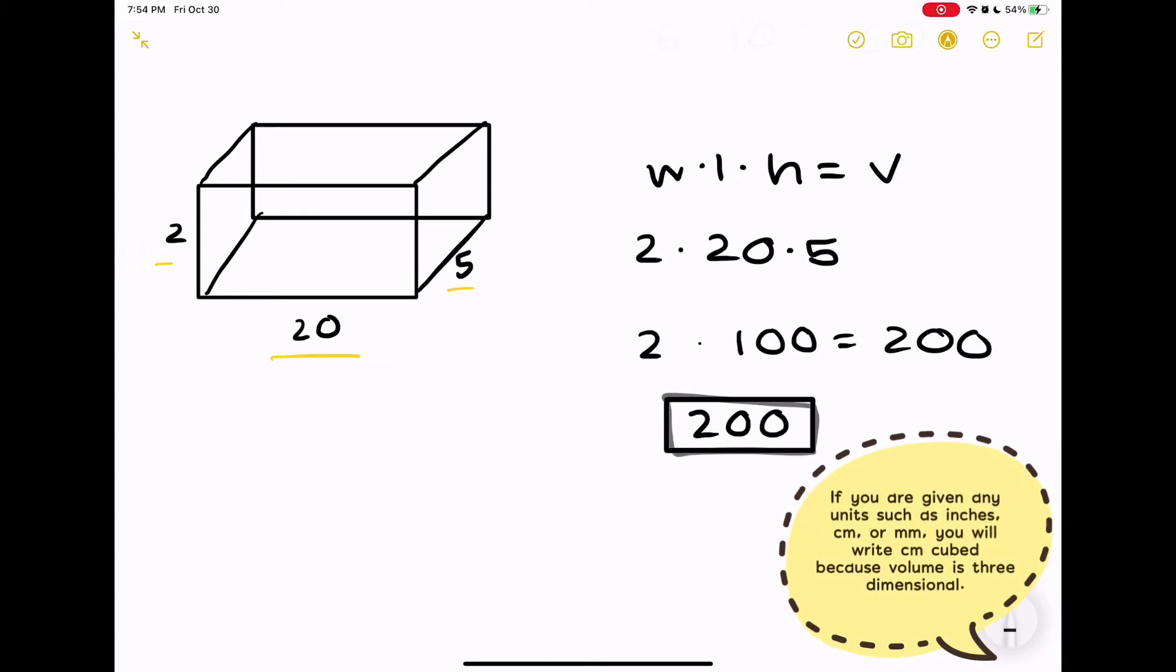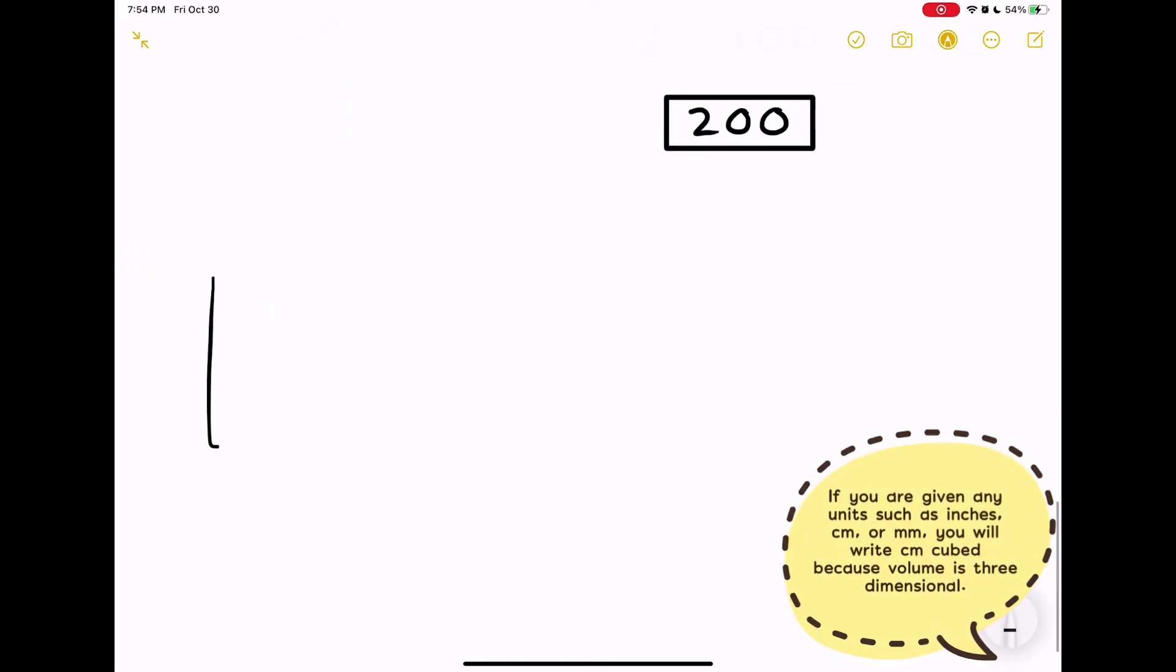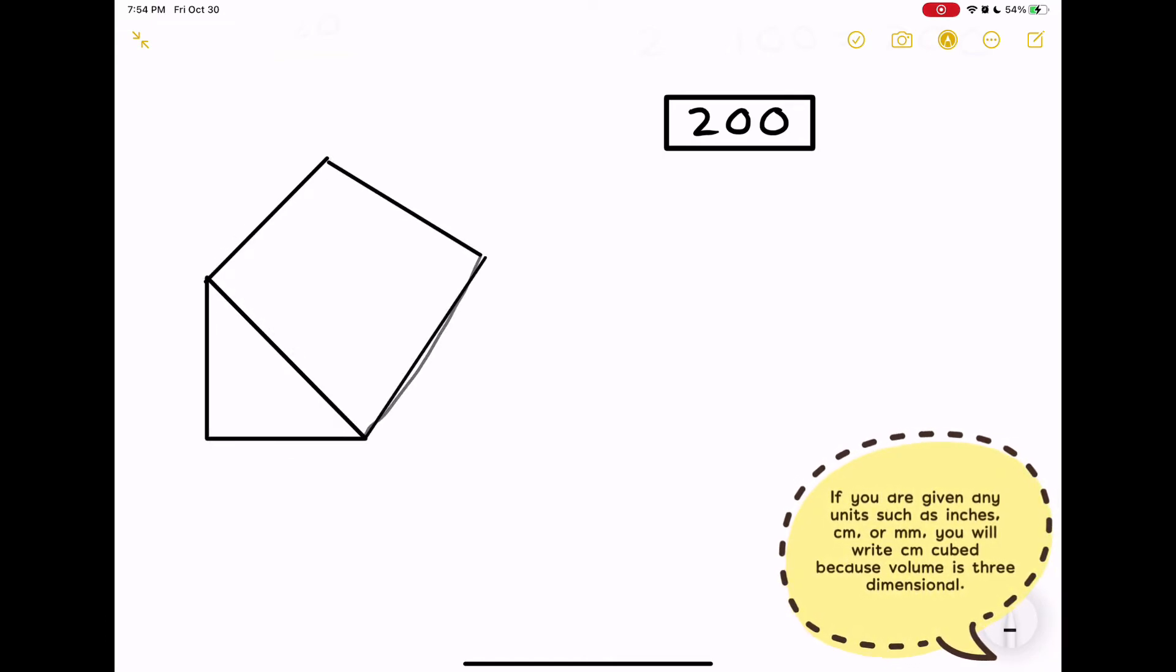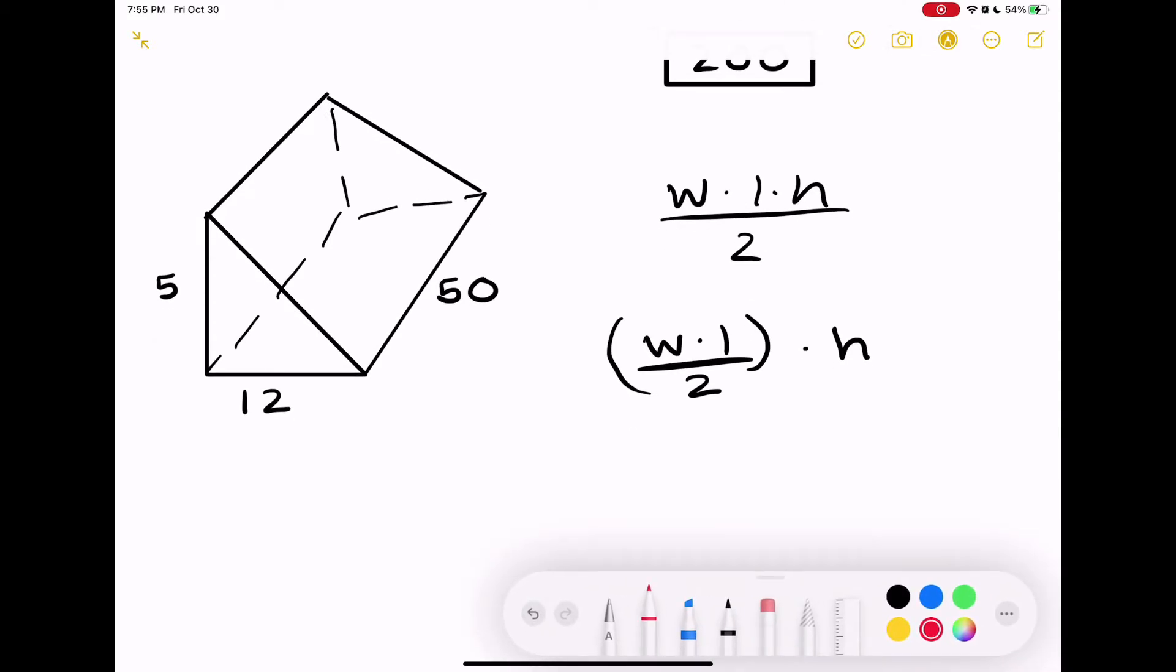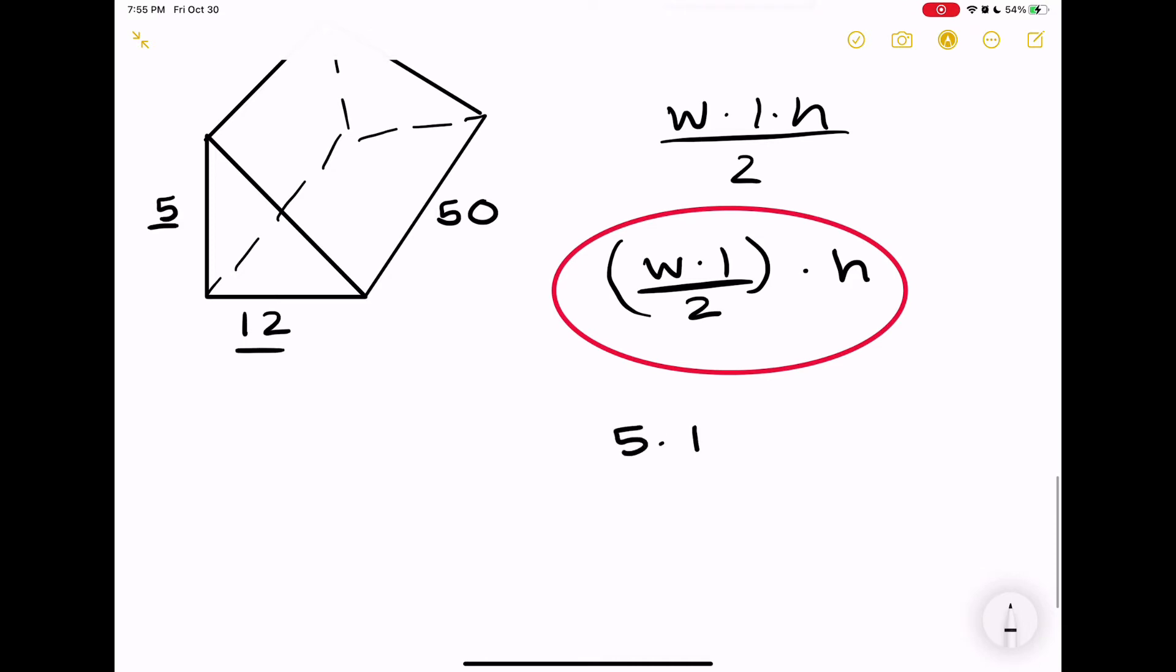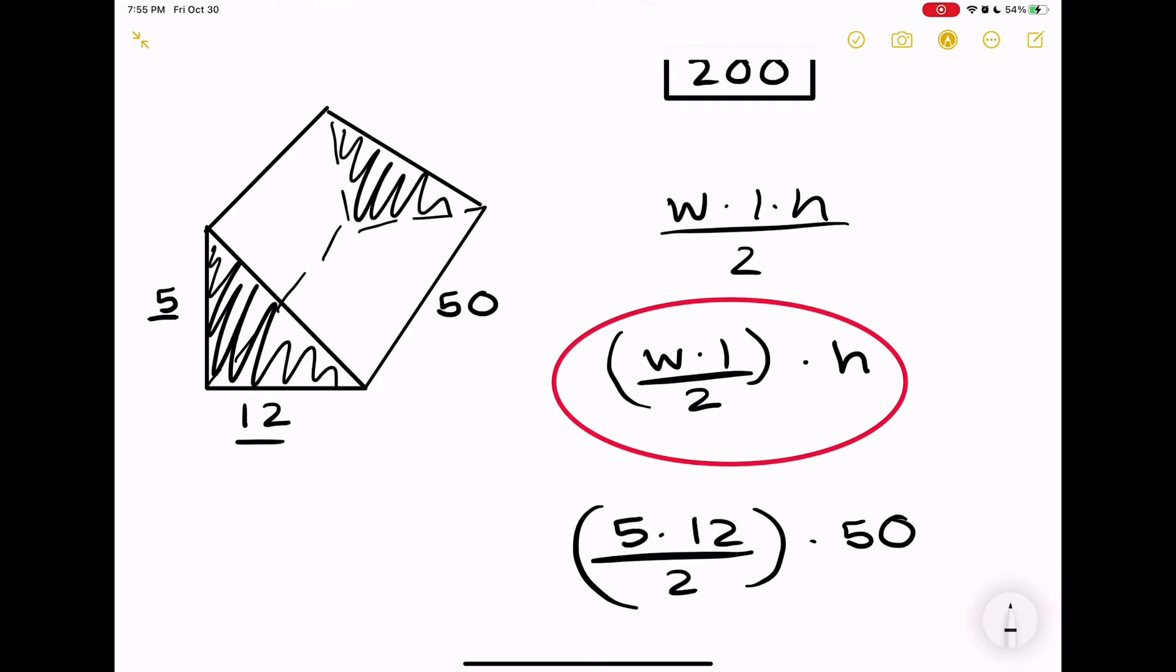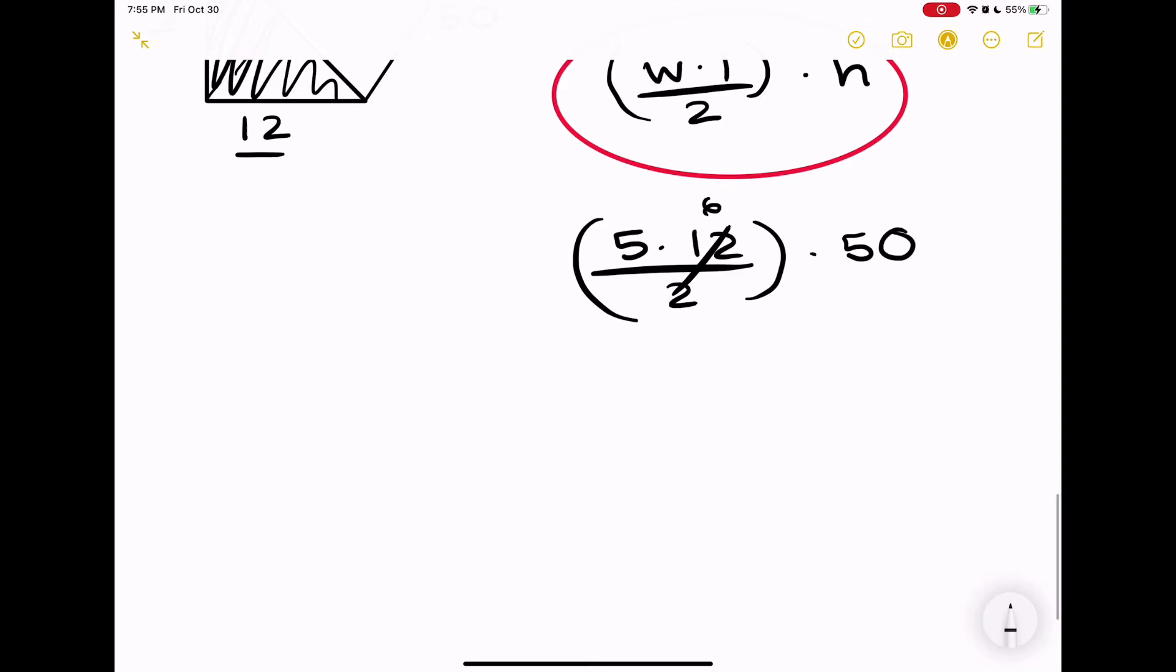Now let's do another triangular prism. Let's say it's 5, 12, and 50. We know the height is 50. If we fill in the equation - we have two different equations to choose from, I chose the second one - we're going to fill everything in: 5 × 12 ÷ 2 × 50. We know it's 50 because the triangle is being stretched out 50 units. We can simplify this and we will get 30 × 50.